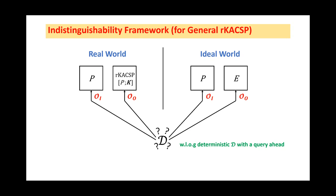In information-theoretical setting, we can assume that D is a deterministic algorithm with a query ahead. We denote its number of queries to Oracle I and Oracle O as q_P and q_E, respectively. Furthermore, we will give the actual key to D at the end of its interaction with the real world. Accordingly, we will give a dummy key if it is interacting with the ideal world. The insecurity of rKACSP against NCCA adversary, making at most q_E queries and q_P queries, can be defined as the formula.